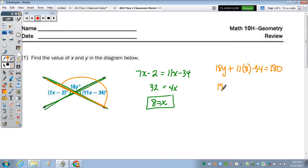So 18y plus, well, 88 minus 34 is 54. Subtract the 54, and 18y is equal to 126, divide by 18, and y is 7.